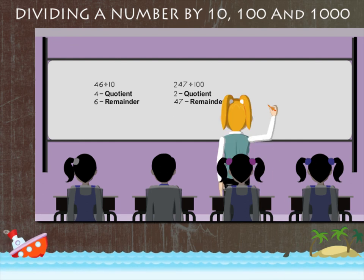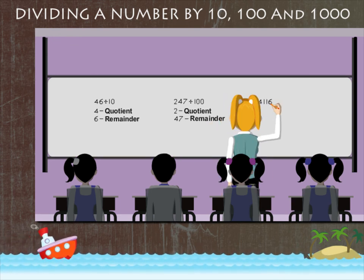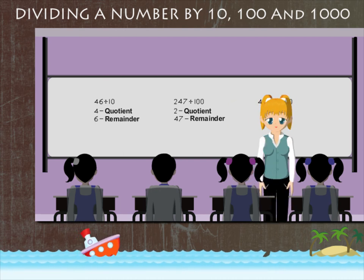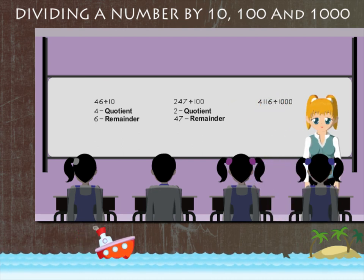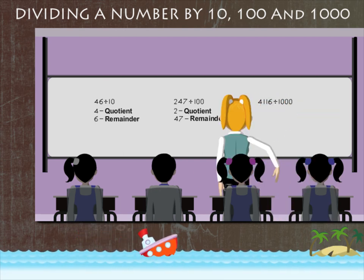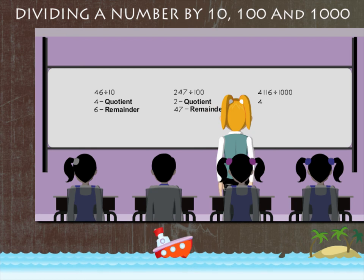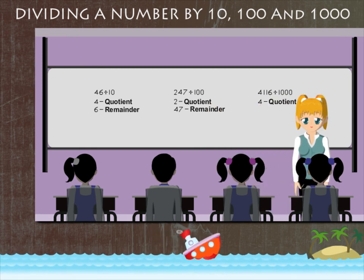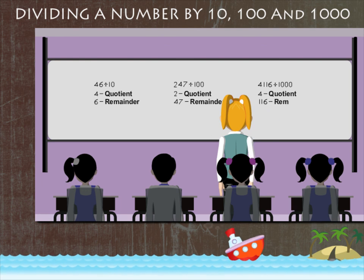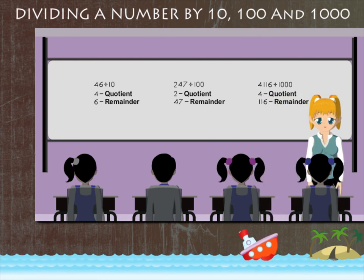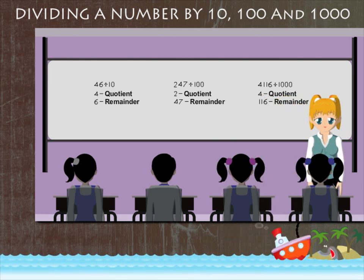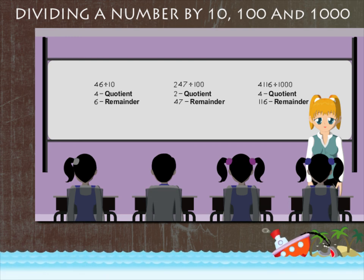This time it's 4,116 divided by 1000. Nancy ma'am says simple — 4 is the quotient and 116 is the remainder. How easy it is!